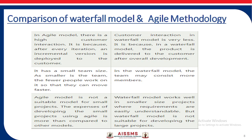Agile methodology has a smaller team size — the fewer people work on it, the faster they can move. In the waterfall model, the team may consist of more members. Agile method is not suitable for small projects; the expenses of developing a small project using agile are more compared to other models. The waterfall model works well in small size projects where the requirements are easily understandable, but it is not suitable for developing large projects.